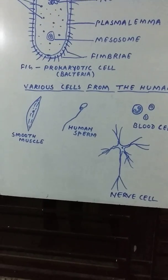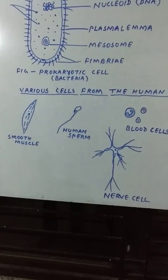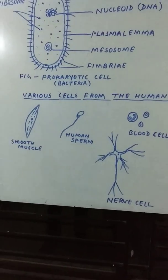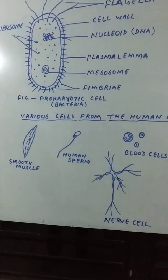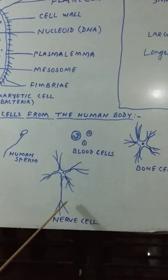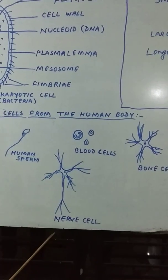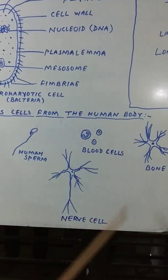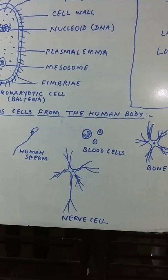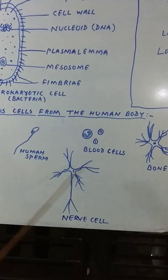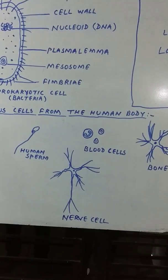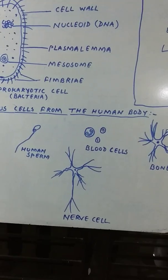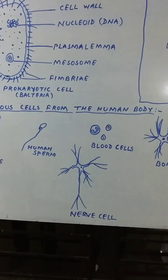Human RBCs are biconcave disc shaped. Nerve cells are elongated and thread-like, because they have to carry messages from cells and organs to the brain and spinal cord. Therefore, such a structure is there.